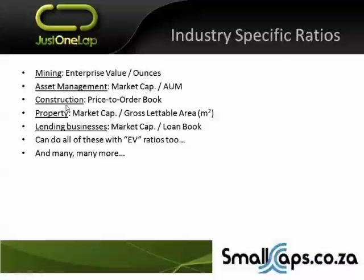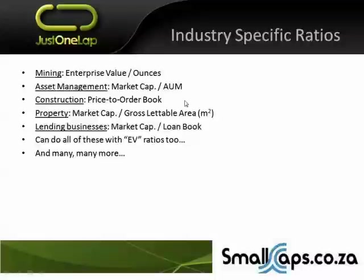In construction, you're currently in a tough market. But you can take a price to order book approach — market cap divided by the order book. The order book is your future revenue. Take the market cap and divide it by the order book and compare companies against each other. Be careful of the timing, the margins, the composition, and how they define the order book — because some include signed contracts, some include probable contracts. Just make sure they have a consistent definition of what the order book is.